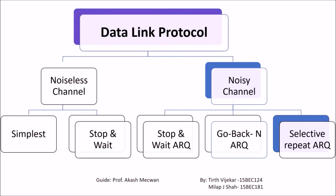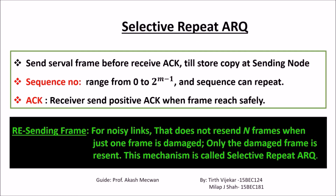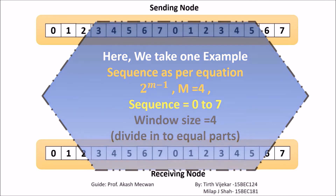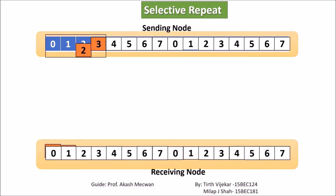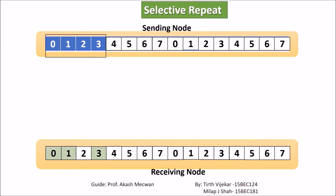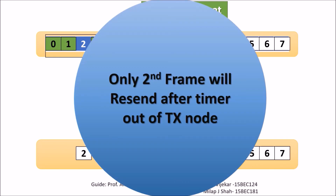Now the last protocol of the noisy channel, which is Selective Repeat. This protocol is slightly different from Go-Back-N ARQ. The difference is: when any frame is lost, the transmitter will not send the whole window again. The transmitter will send only the lost frame — that is, only the frame for which it did not receive an acknowledgement. So this protocol is better than Go-Back-N.